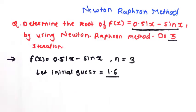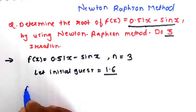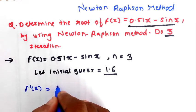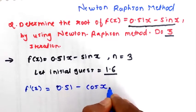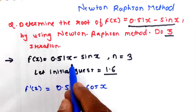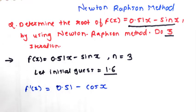Next, we differentiate the above function with respect to x. So f'(x) = 0.51 − cos(x). The differentiation of 0.51x gives 0.51, and the differentiation of sin(x) gives cos(x).